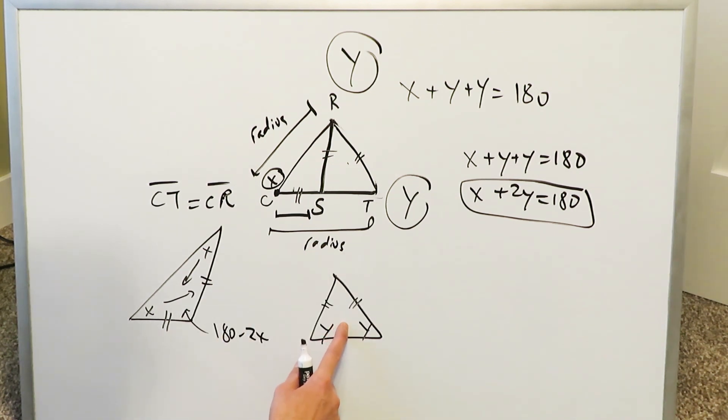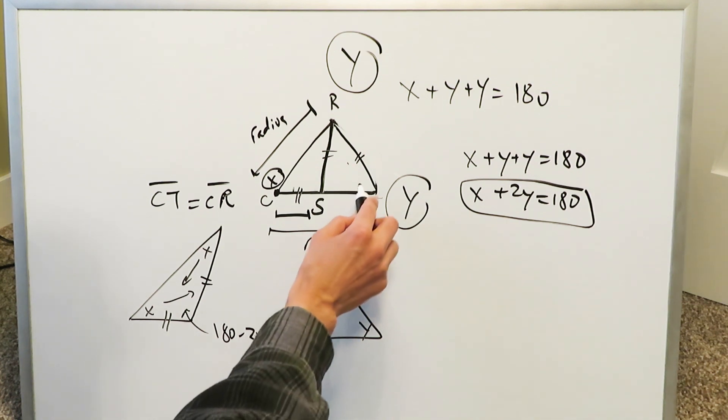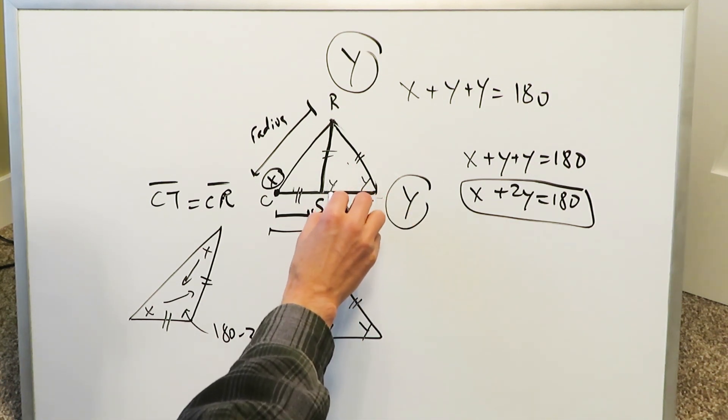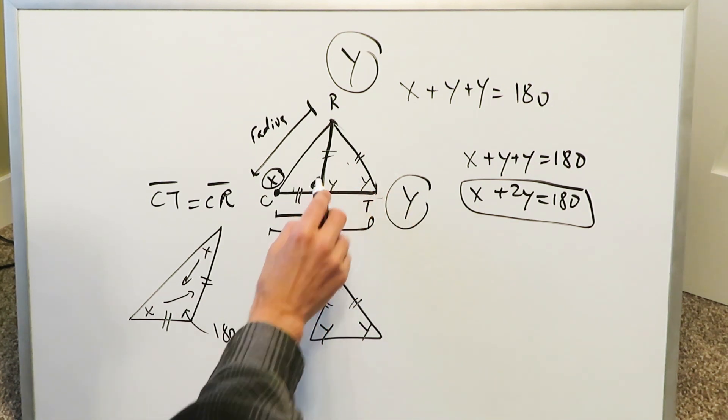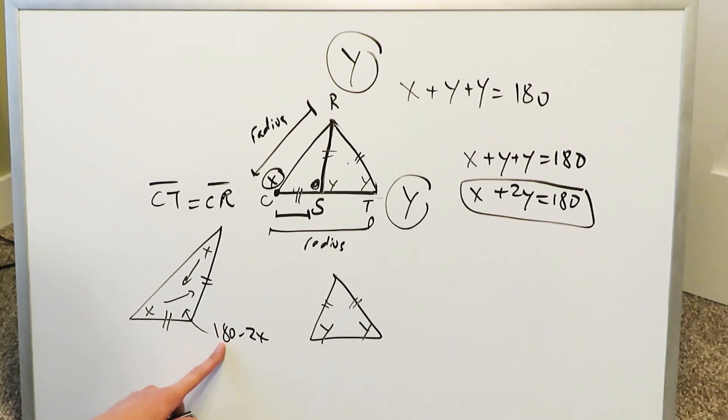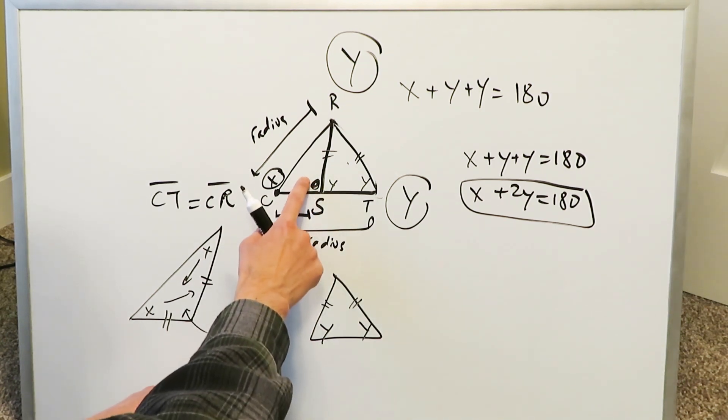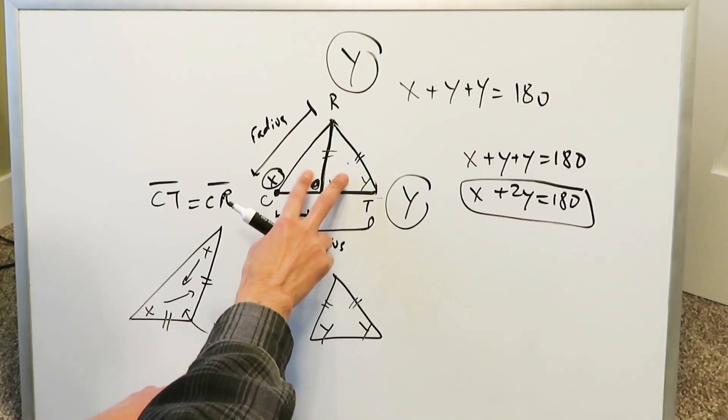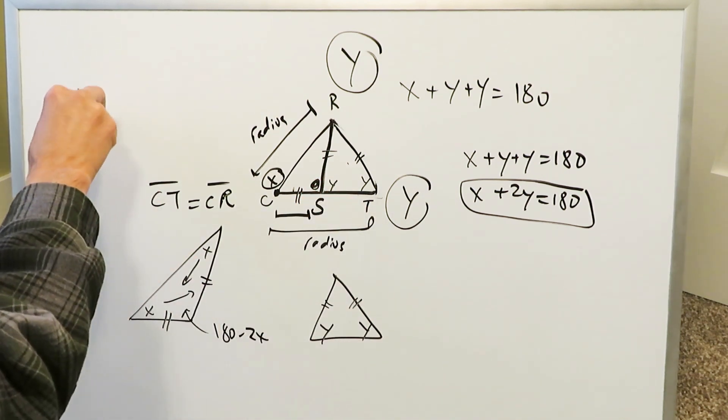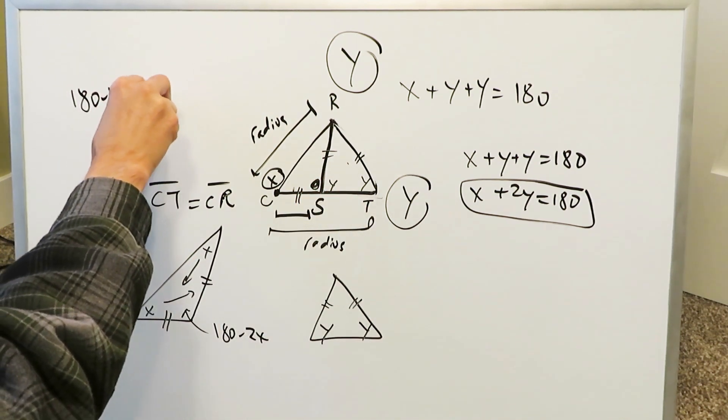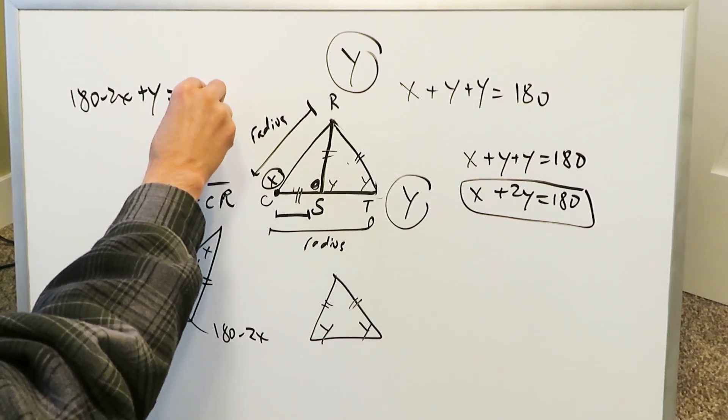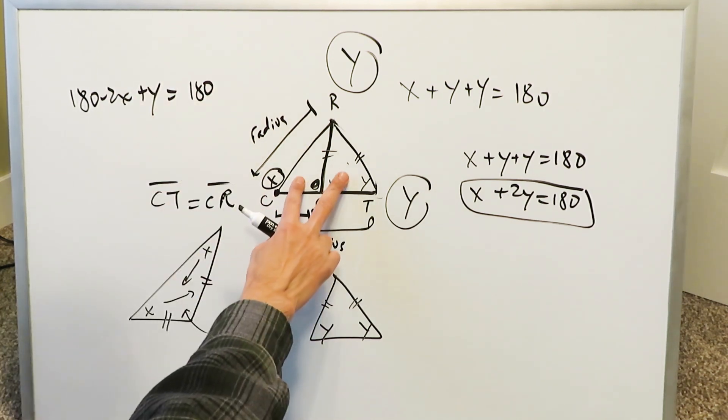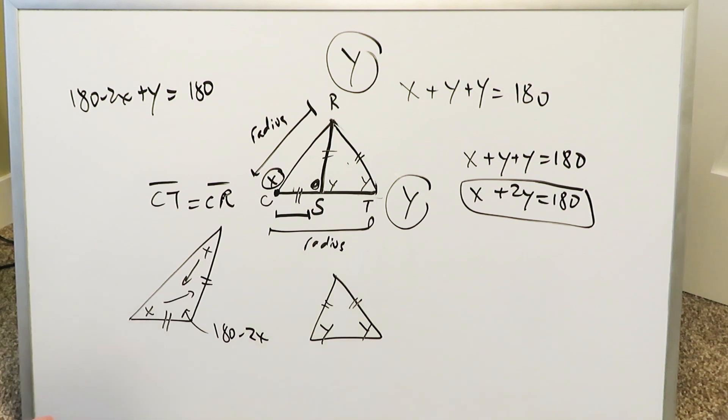And now coming back to this, this will help us develop that second equation. I have established that this right here is Y and this right here is Y and we already know what this right here is. This right here is 180 minus 2X. This 180 minus 2X and this Y are in a supplementary relationship. We have 180 minus 2X plus Y is equal to 180 because these are supplementary angles. These two are supplementary because they develop and demonstrate a straight line which equals 180.